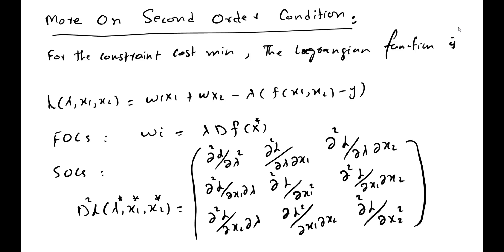In the previous video lecture we discussed that if the second order condition is not met and we change the factors x1 and x2 by some amount h1 and h2, then the second order condition will not be met — that is, the isoquant will not be convex to the origin at the point of tangency.